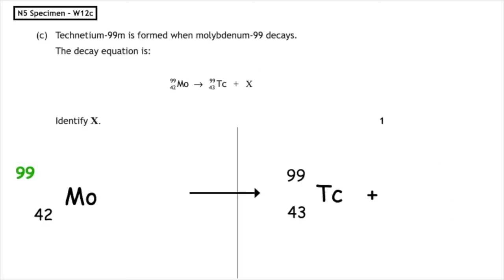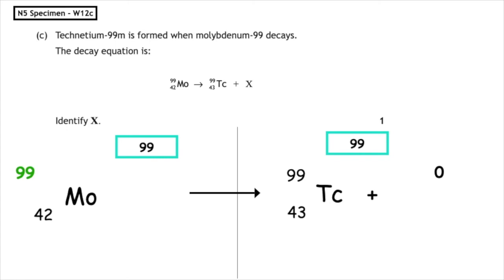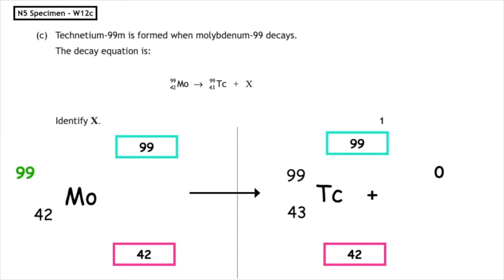This past paper question is from the National 5 specimen paper, written question 12c. Technetium-99 is formed when molybdenum-99 decays. The decay equation is given — identify X. The total mass number on the reactant side is 99, so the product side also has to equal 99. 99 plus what equals 99, so the mass number has to be zero. On the reactant side, the bottom number totals 42. On the product side, 43 plus what gives 42 — that must be minus one, which means we have produced an electron, which is a beta particle.